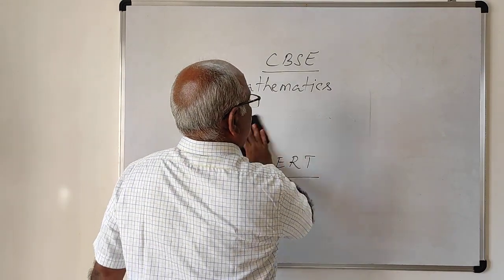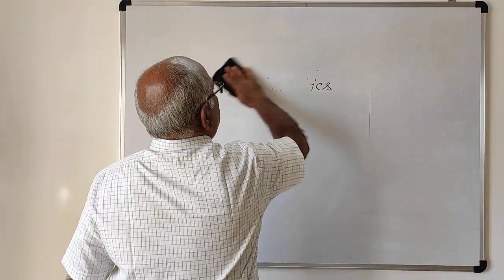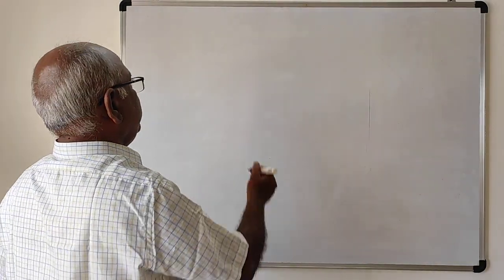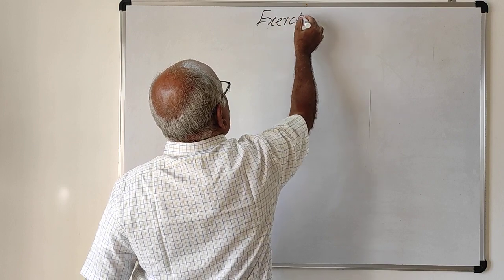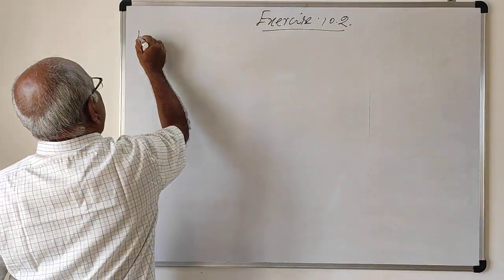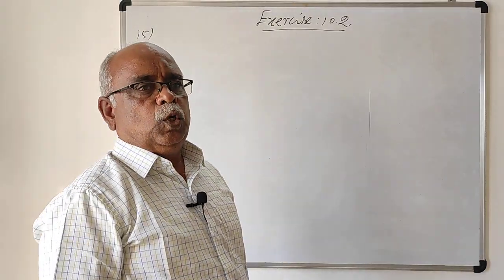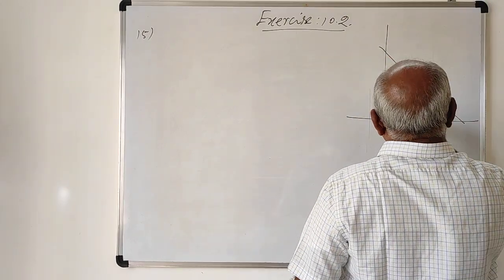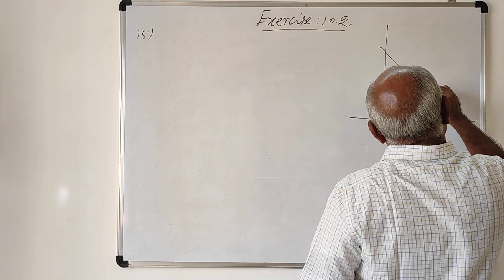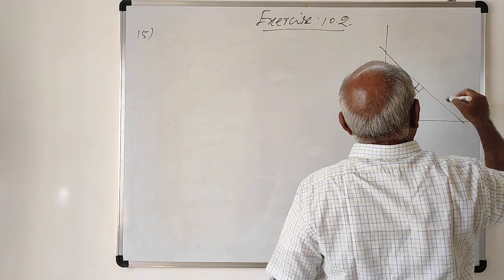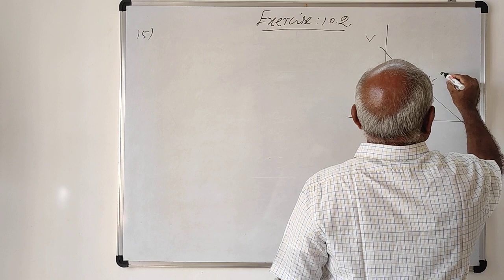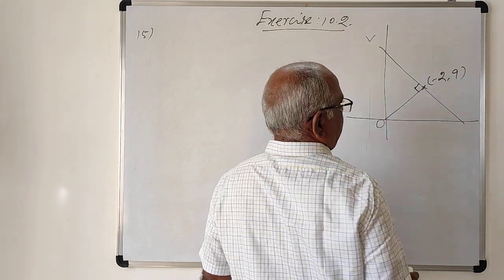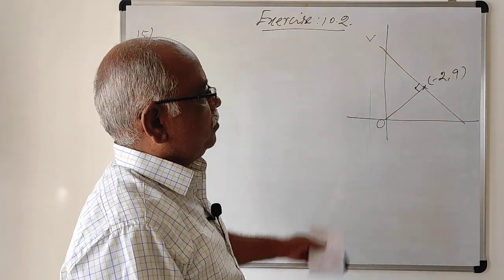Now let me get into the video. Problem 15, that is problem 15 in Exercise 10.2. A perpendicular from the origin to the line meets at a point (-2, 9). The perpendicular from the origin meets the line L at the point (-2, 9). Find the equation of the line L — that is the problem.